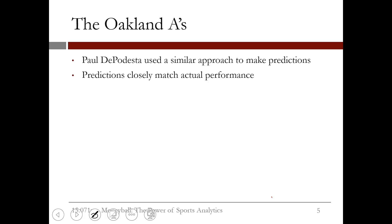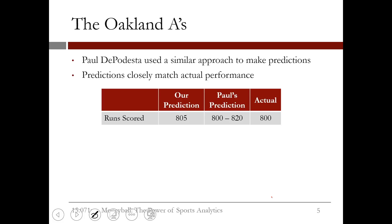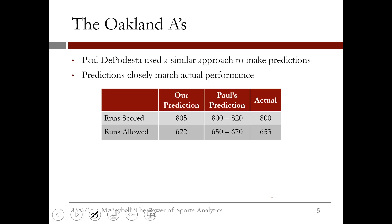Paul DePodesta used a similar approach to make predictions. It turns out that our predictions and Paul's predictions closely match actual performance. Our prediction for runs scored was 805 runs; Paul predicted between 800 and 820 runs, and the 2002 Oakland A's actually scored 800 runs. For runs allowed, we predicted 622; Paul DePodesta predicted between 650 and 670, and the Oakland A's actually allowed 653 runs. For wins, we predicted 100 games; Paul predicted between 93 and 97 games, and they actually won 103 games.